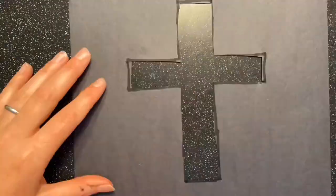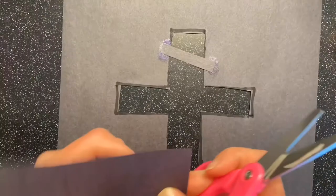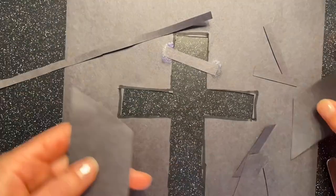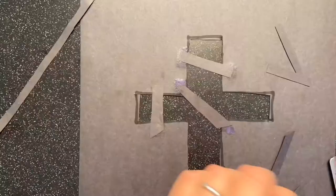Take your piece of paper that you cut earlier and cut strips of black paper out so that you can glue them across your cross to make the window panes for your stained glass.